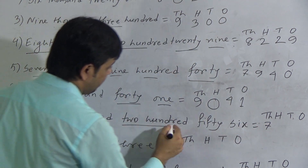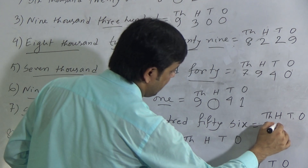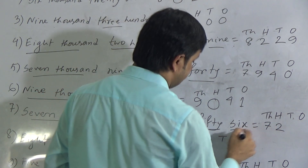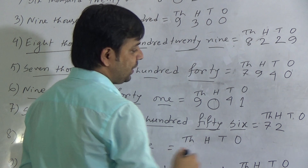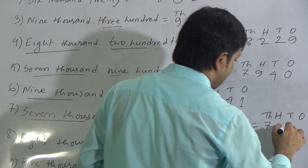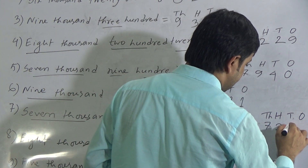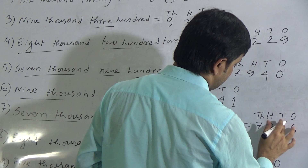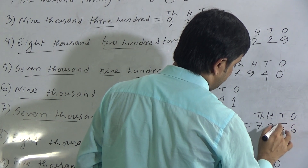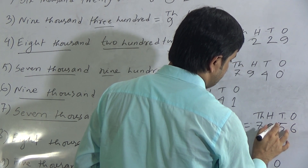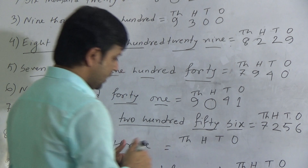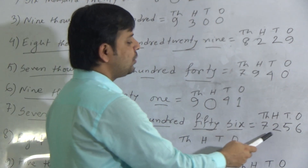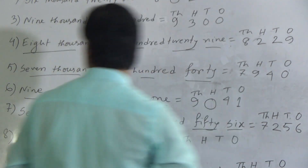Question 7: seven thousand two hundred and fifty-six — 7256. We write 2 below hundreds. To write 56, we write 5 in tens position and 6 in ones position. This is 7256.